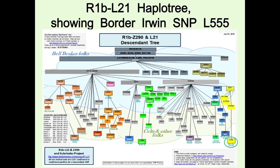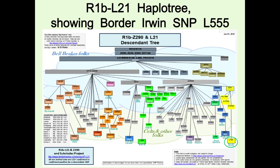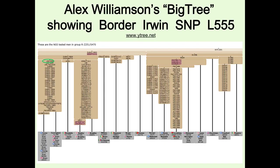Here is Mike Walsh's picture of R1b. We're in the L55 branch, bottom right — quite young, right at the bottom of the limb. Here's Alex Williamson's big tree; L55 is in a huge block — the bottom of that block is about a thousand years old, the top about three thousand. When enough people test, that block will break up and we'll be able to split it.